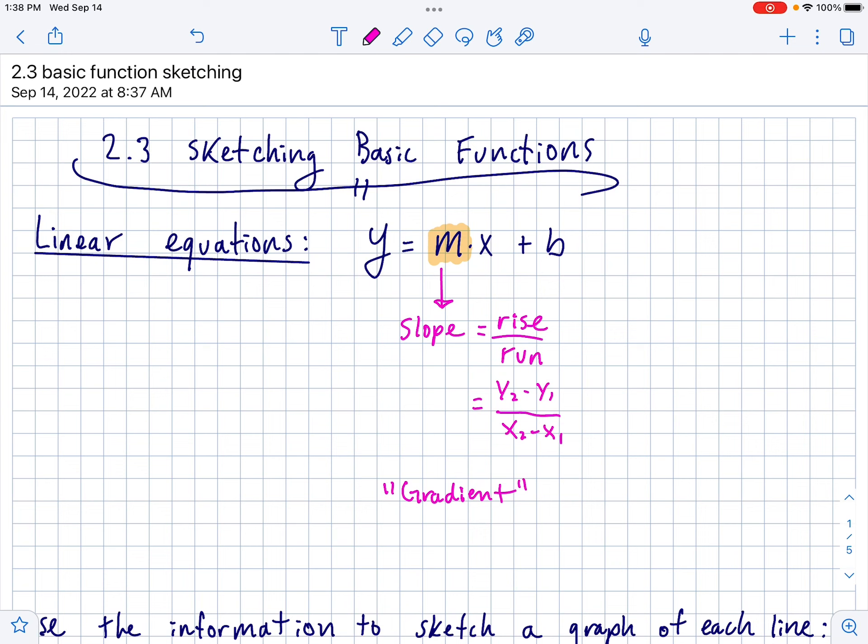And another word for slope is gradient. You may not have heard this word gradient before, but it's an IB term for slope. So sometimes there's going to be problems where they just say, find the gradient of this, or give in the gradient. So know that slope and gradient are interchangeable.